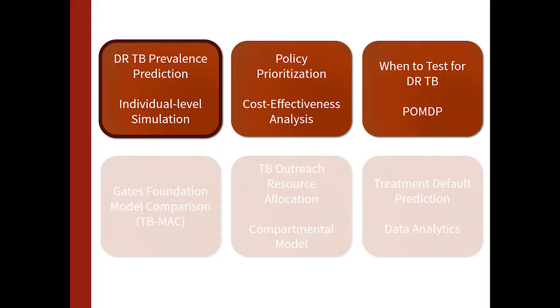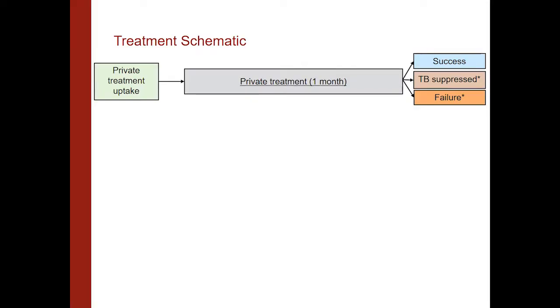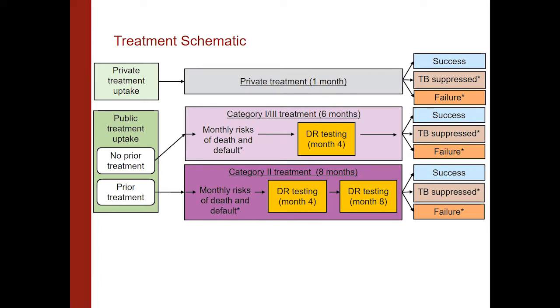One of the models I originally built was an individual-level simulation for predicting drug-resistant TB prevalence. In this model, we followed individuals from birth until death, moving through different health states — whether latent drug-sensitive or drug-resistant TB, active disease, as well as treatment. We wanted to make this model as detailed as possible. Since we were modeling Indian tuberculosis, we included many of the treatment options available in India, such as private treatment as well as the public treatment offered by the federal government for first-line and second-line therapy.